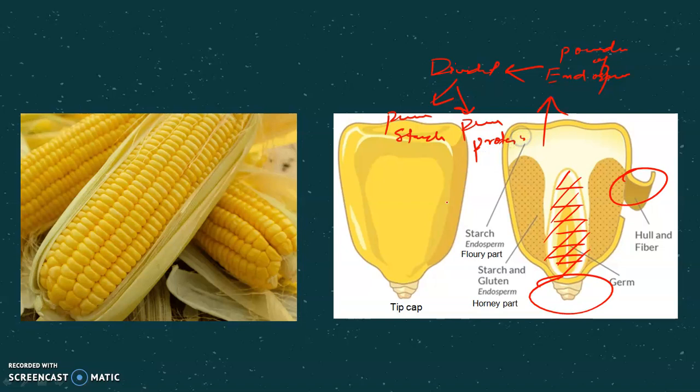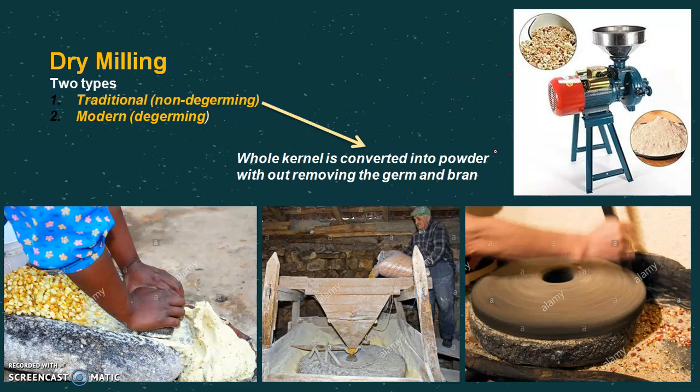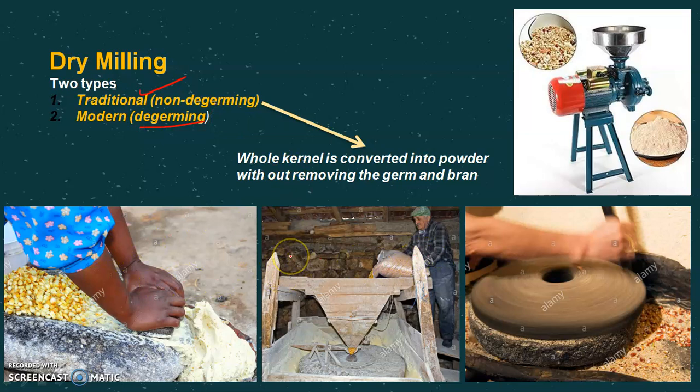Dry milling is of two types. Traditional dry milling is also known as non-degerming, meaning we don't remove the germ through this method. The second type is modern milling, which is also known as the degerming method.